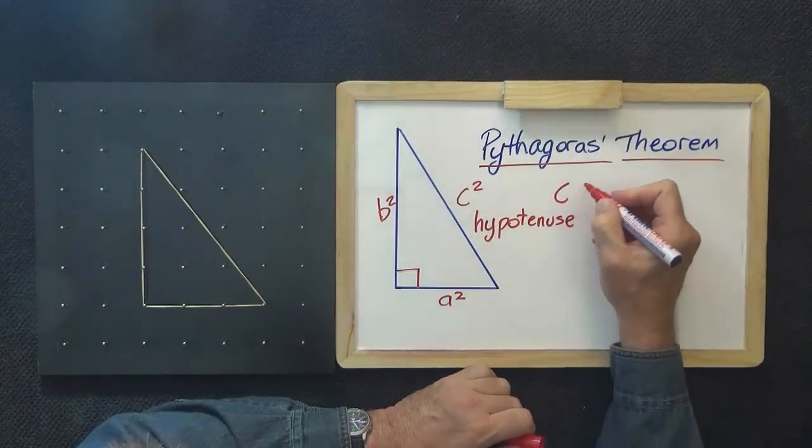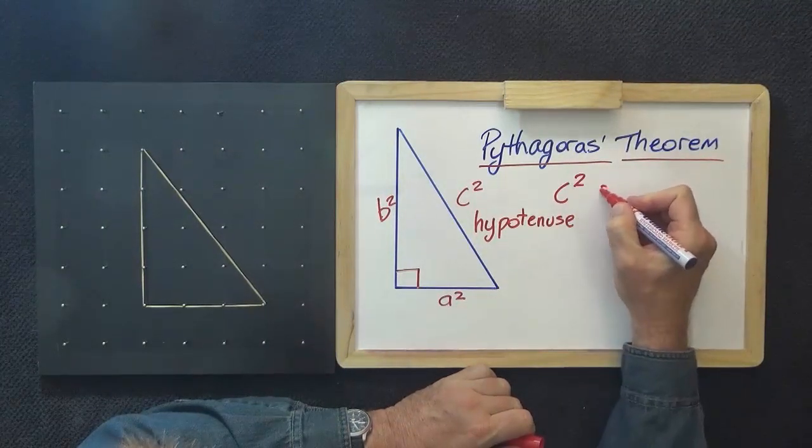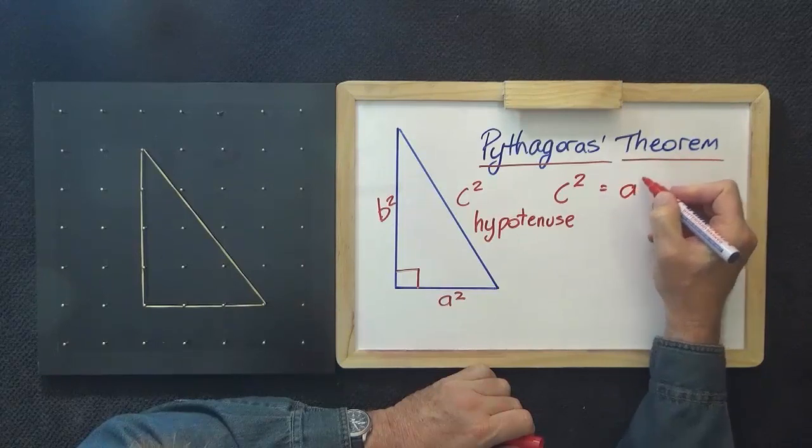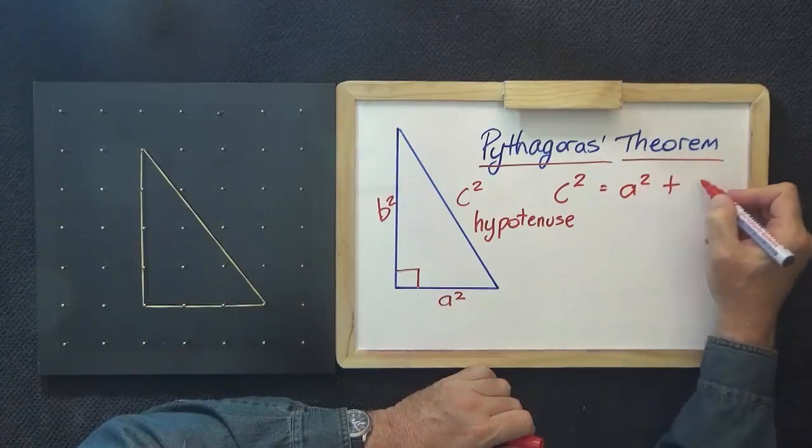In algebra, we can say C squared equals A squared plus B squared.